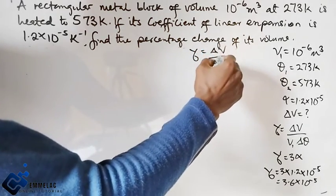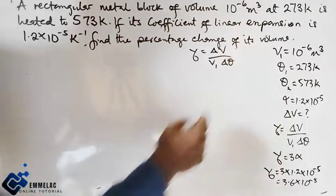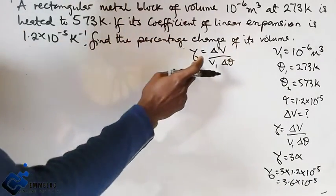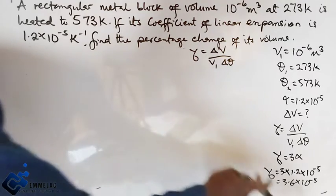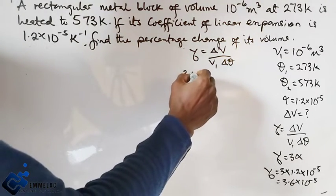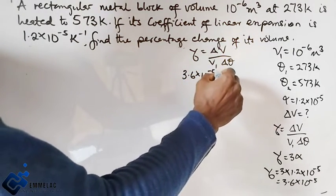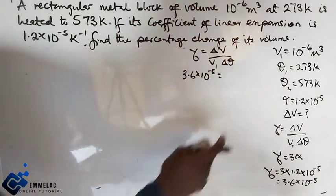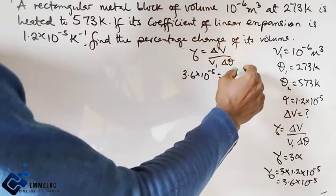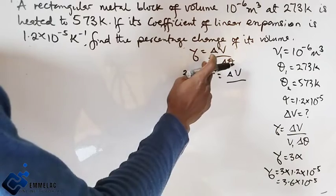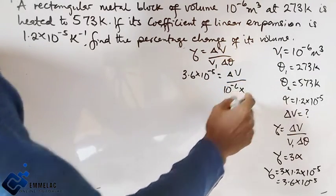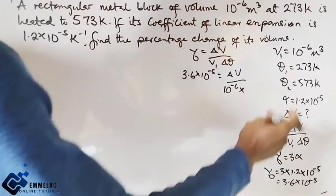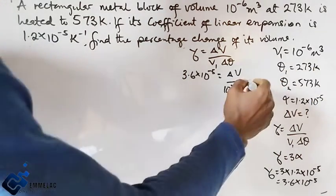Let us now move on to the initial volume and change in temperature. We have the cubic expansivity which is 3.6×10^-5, change in volume we don't know, and our initial volume times the temperature difference (573 - 273) should give us 300.